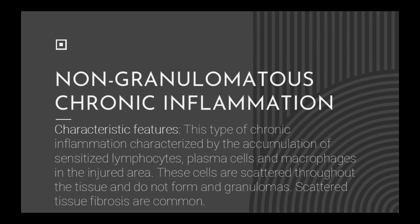Non-granulomatous chronic inflammation. Characteristic features: this type of chronic inflammation is characterized by the accumulation of sensitized lymphocytes, plasma cells and macrophages in the injured area. These cells are scattered throughout the tissue and do not form granulomas. Scattered tissue fibrosis is common.